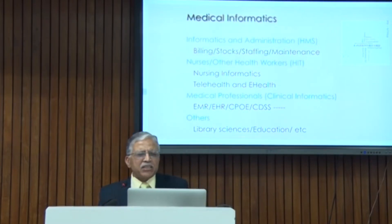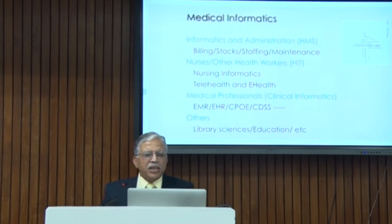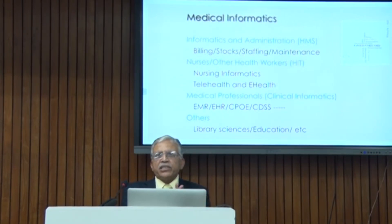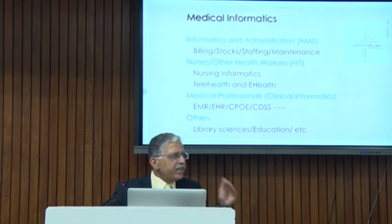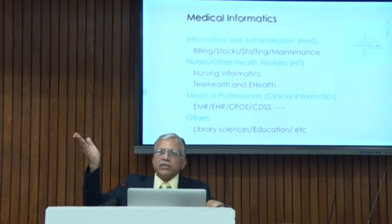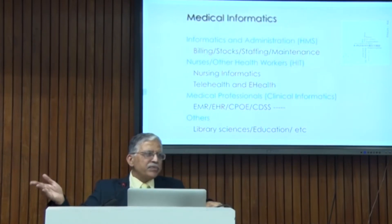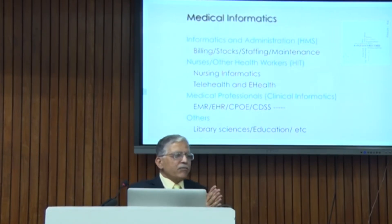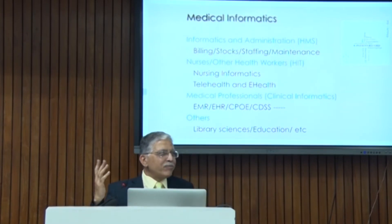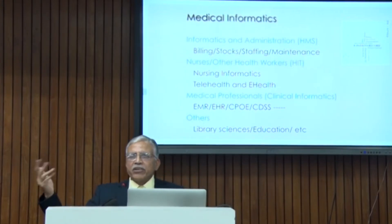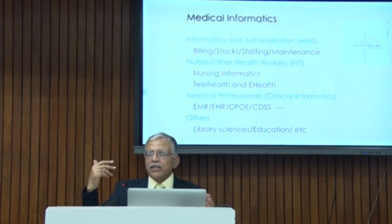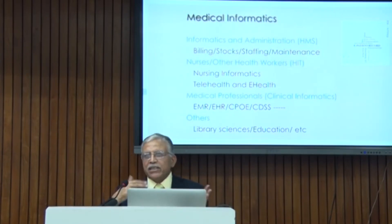The various components of medical informatics are basically the administration of healthcare support. It is done at two levels. One is called a health information system, used in public health — what the government tries to provide to communities. The other is hospital information system. Unfortunately both are called HMS: health management system and hospital management system, because the H is common. Hospital management involves inventory control, stocks, bed admission rates, and so on.